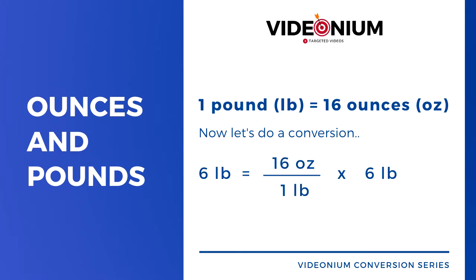16 ounces make a pound, so we perform this operation to get the answer in ounces. Did you notice how the pound units get cancelled from the numerator and denominator? So basically, 6 pounds contain 96 ounces.